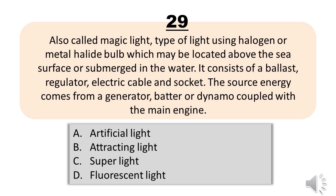Number 29. Also called magic light, a type of light using halogen or metal halide bulb which may be located above the sea surface or submerged in the water. It consists of a ballast, regulator, electric cable and socket. The source of energy comes from a generator, battery or dynamo coupled with the main engine. A. Artificial light. B. Attracting light. C. Super light. D. Fluorescent light. The correct answer is Letter C. Super light.